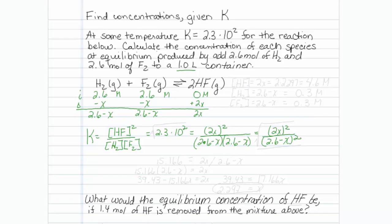Well it would be very easy to solve this if I took the square root of the K constant and the square root of 230 turns out to be 15.166 and the square root of this quantity is just 2x divided by 2.6 minus x.